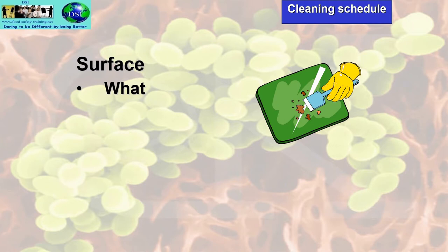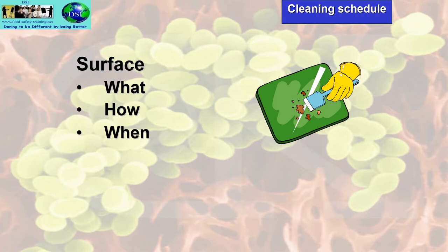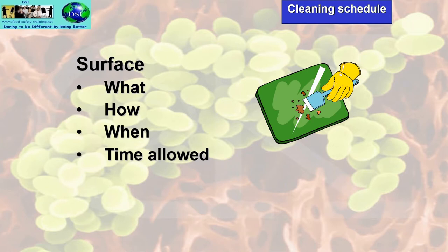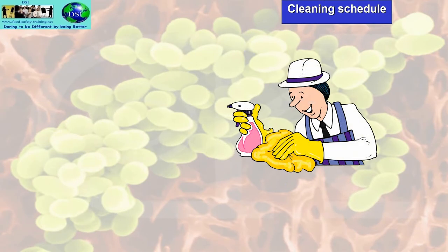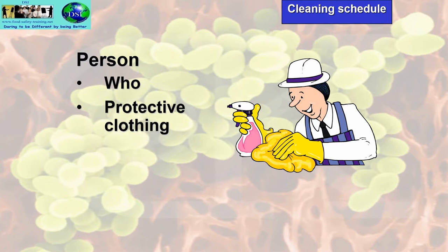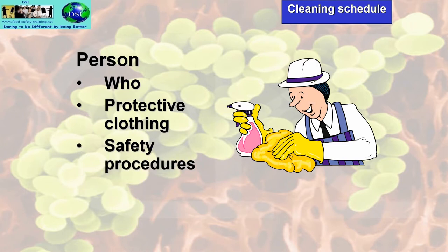The cleaning schedule should state what type of surface needs to be cleaned, how it's going to be cleaned, and when — the frequency could be once a day, four times a day, etc. It should also state the contact time allowed for any chemical being used, what standard is required, the person who will do the cleaning, what protective clothing they will wear, the safety procedures to be adopted, and it needs to be checked and recorded.